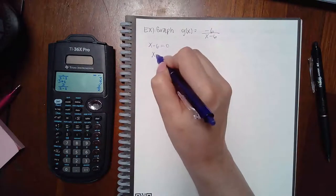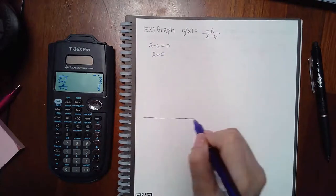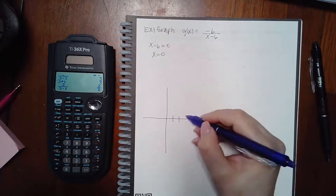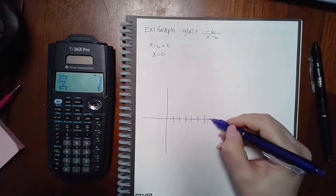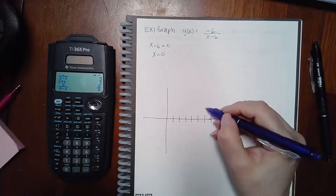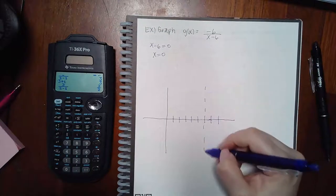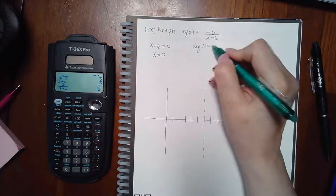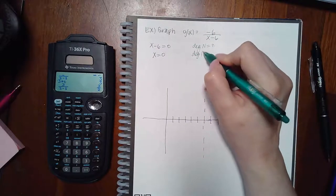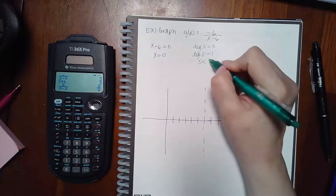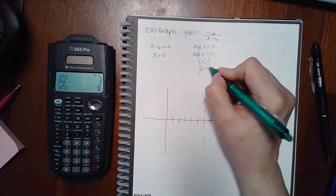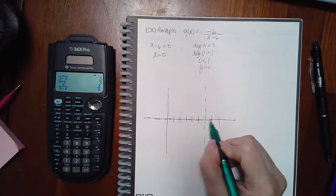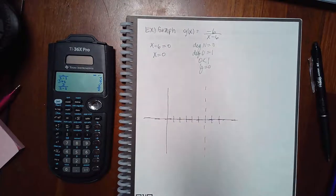Now let's try the next one. The vertical asymptote is found by setting the denominator to zero, giving x = 6. The degree of the numerator is zero and the degree of the denominator is one, so we have the case where it's less — the horizontal asymptote is automatically at y equals zero, meaning a dotted line on top of the x-axis.